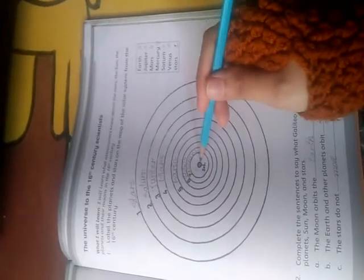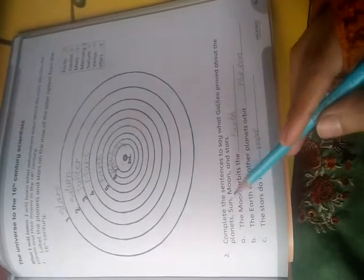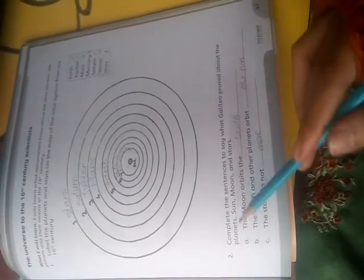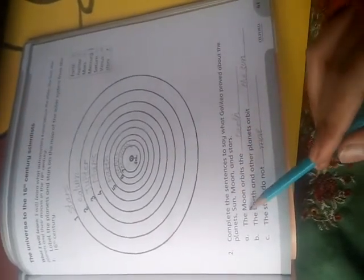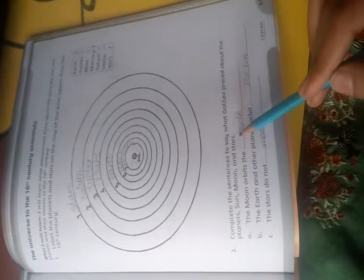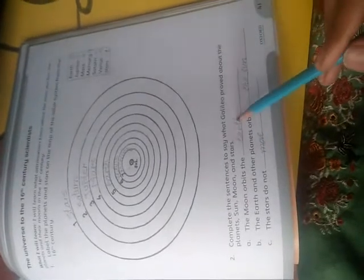So this is our first activity. The second activity is about fill in the blanks or complete the sentences. Let's start. Complete the sentences to say what Galileo proved about the planets, sun, moon and stars. यह fill in the blanks हैं जो के Galileo ने prove की थी about the planets, sun, moon and stars. The moon orbits the earth. यहनी उसने यह prove किया था कि moon किसके orbit करता है, किसके गिड़ भूमता है, Earth के. तो first blank में क्या आएगा? Earth. E-A-R-T-H Earth.